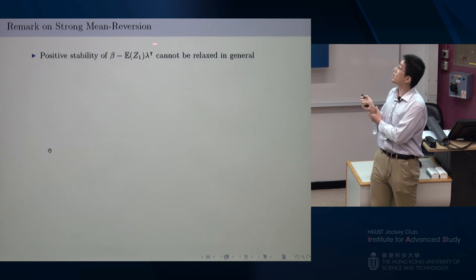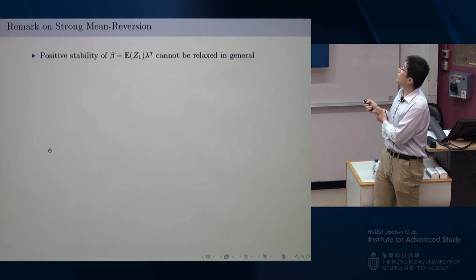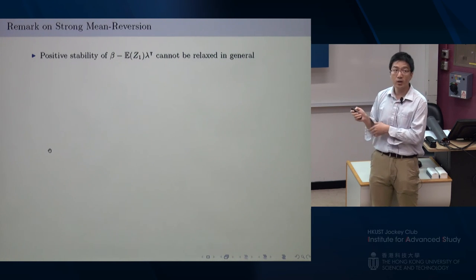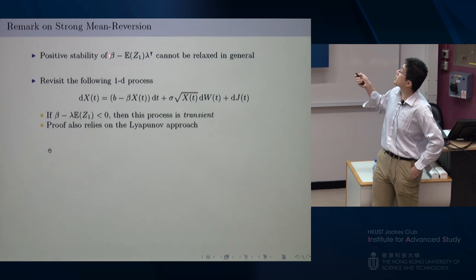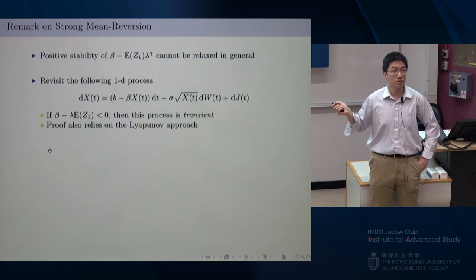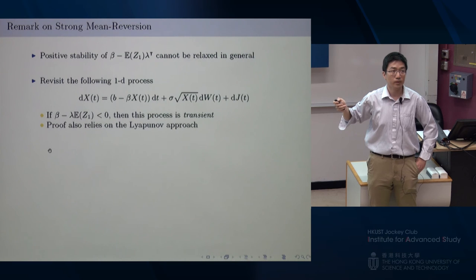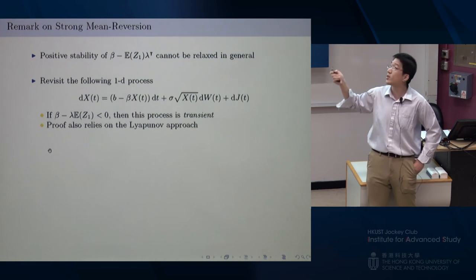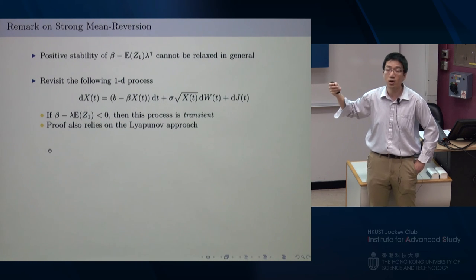One additional remark: this condition is close to being necessary. If instead the condition is reversed — that is, the quantity is negative instead of positive — one can show that the process becomes transient: it does not have an equilibrium, and as t goes to infinity the process drifts away to infinity. So even though I cannot rigorously show this condition is exactly necessary, this counterexample shows it cannot be relaxed in general.